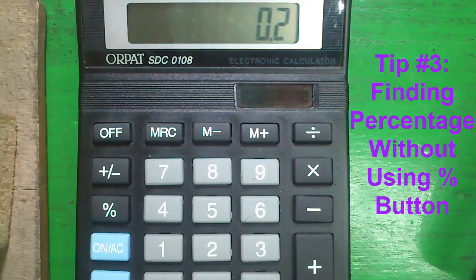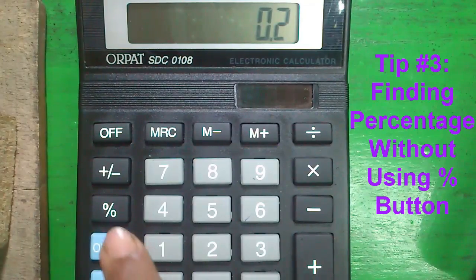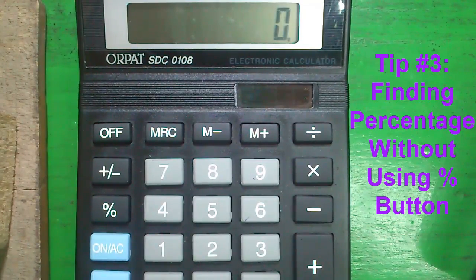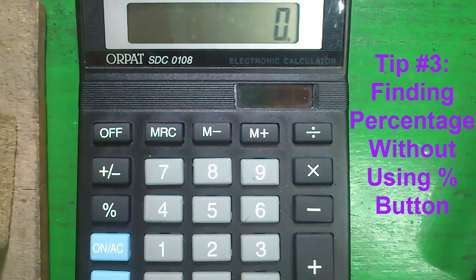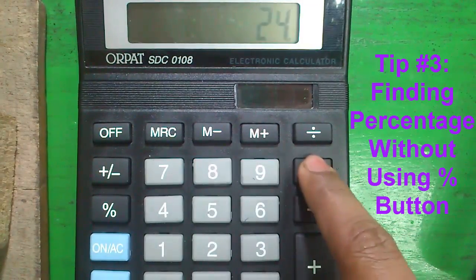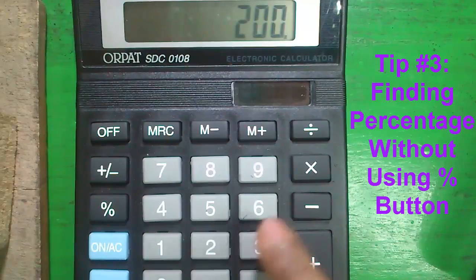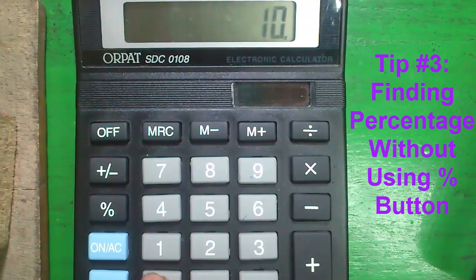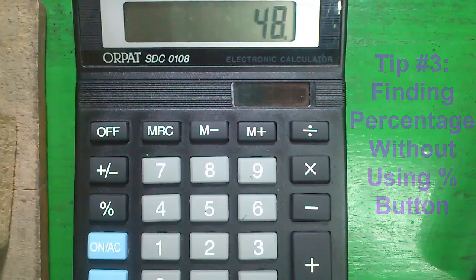Tip number 3, finding percentage without using the percent button. Say I want to find out 24% of 200, so I will enter 24 multiply 200 divided by 100 and press equals. It is 48.